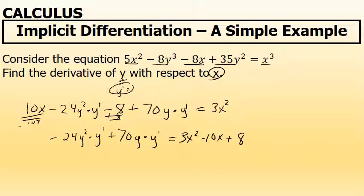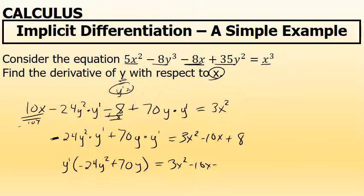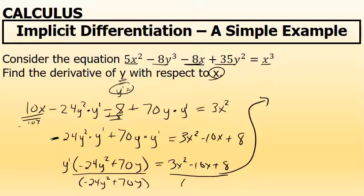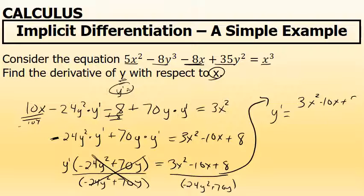Once I have all y prime terms on the left side, I factor y prime to the front, leaving negative 24y squared plus 70y inside the parentheses. The right side becomes 3x squared minus 10x plus 8. I then divide both sides by the quantity negative 24y squared plus 70y to isolate y prime. This gives y prime equals 3x squared minus 10x plus 8, all over 70y minus 24y squared.